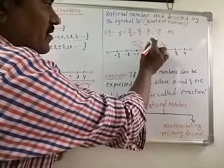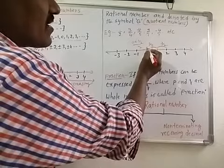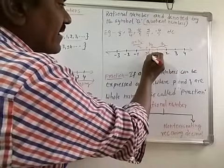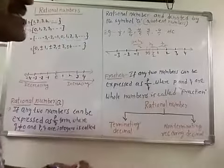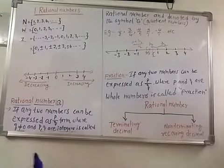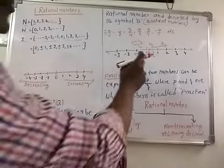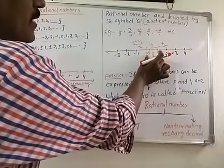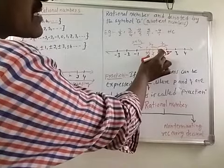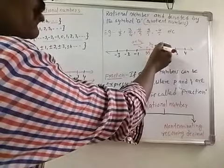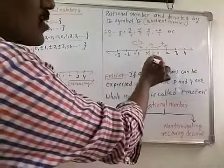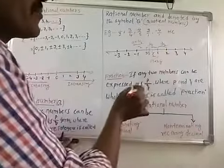Between 0 and 1/4, the rational number is 1/8. Between any two rational numbers, there are infinitely many rational numbers. For example, between 0 and 1 we have 1/2, 1/4, 1/8, 1/16, 1/32, and so on — infinitely many. So between any two numbers, there are infinitely many rational numbers.